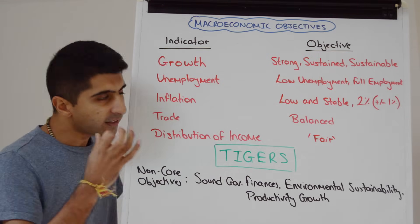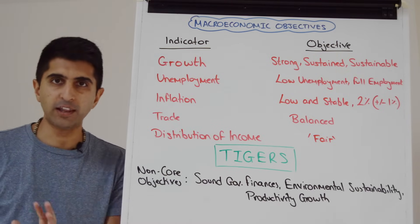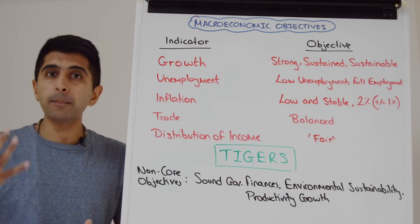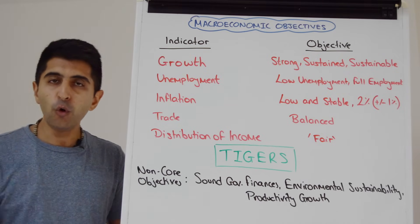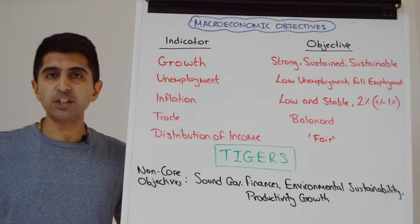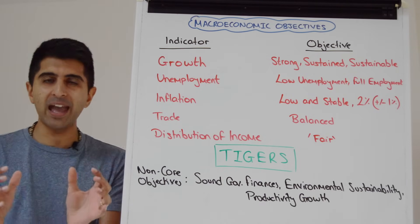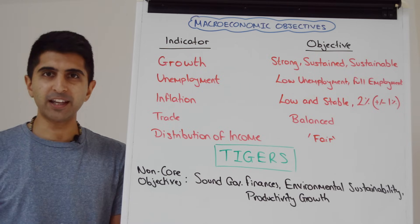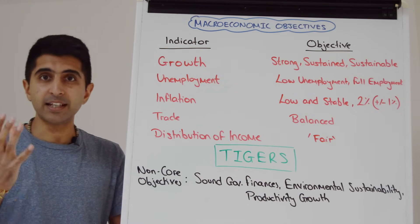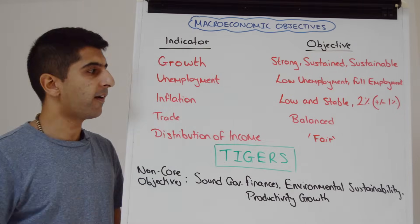When it comes to the distribution of income, no economy will have a precise figure for this. It's always going to be somebody's opinion, and therefore it's a normative consideration depending on the government in charge at the time. That's why the objective of a fair distribution of income reflects the fact that it's an opinionated consideration — something very important to bear in mind.